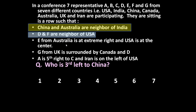Next: E from Australia is at extreme right and USA is at the centre. Yes, we can fix their positions. E from Australia is at extreme right — this is the extreme right — and USA is at the centre. This is the centre.